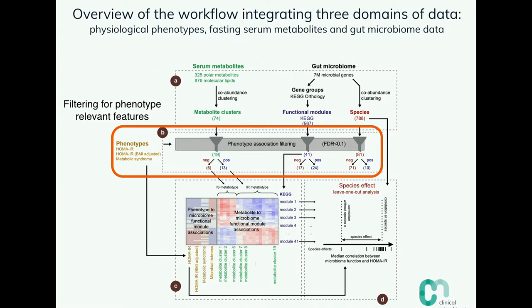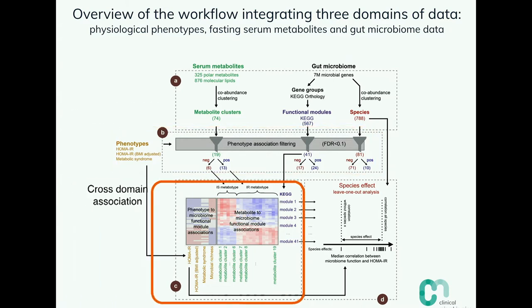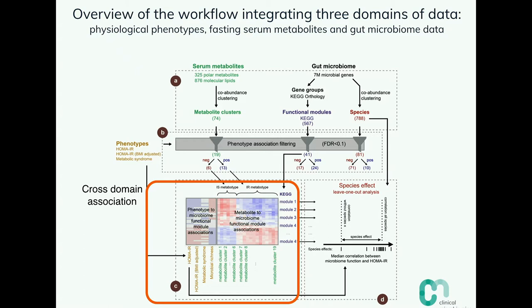We then used clinical data to filter those metabolites and species that were most interesting, reducing to 19 metabolite clusters and 81 species associated with the phenotype. After that, we tried to make associations between those domains of data — connecting species to metabolites that could explain the human phenotype. This creates a huge complexity problem, as many different species can produce the same metabolites, the host can too, you're eating food, and a lot is happening in the small intestine while we're measuring in the stool.